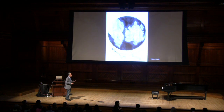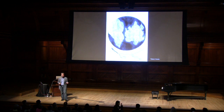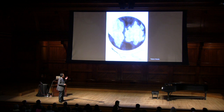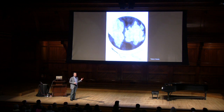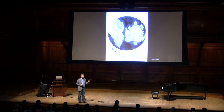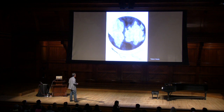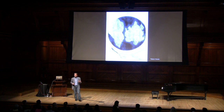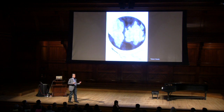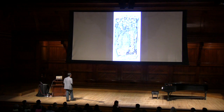Similarly, Robert Hooke was interested in understanding living things we can't see with the naked eye. It was from this simple image from the 1600s that we came to understand that all living things are made up of cells — these tiny, remarkable, basic units of life. Art and the ability to represent things visually was at the very foundation of our understanding of what actually composes life as we know it today.